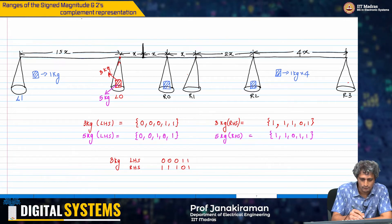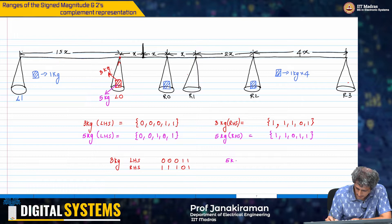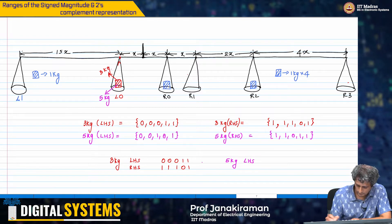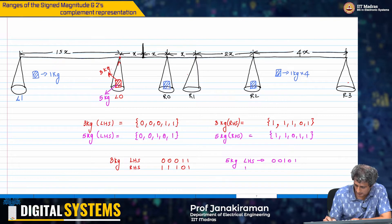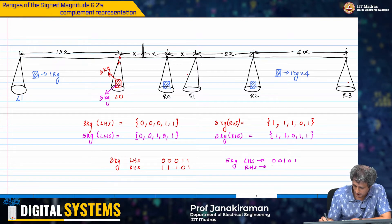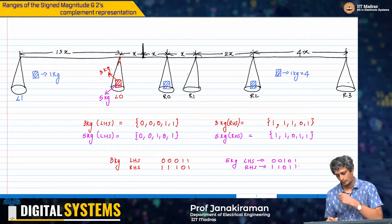Similarly, for 5 kg LHS, we got the representation 0, 0, 1, 0, 1. On the RHS, we got the representation 1, 1, 0, 1, 0, 1, 1.